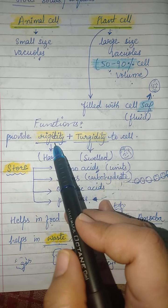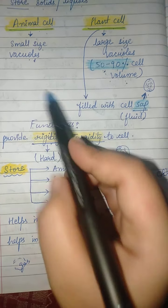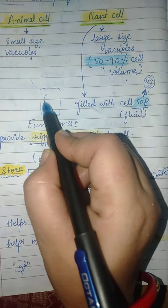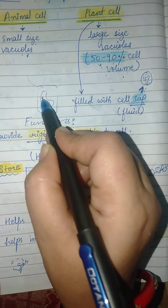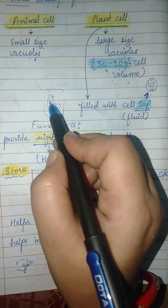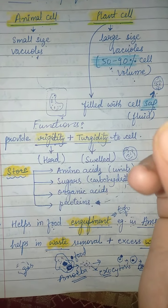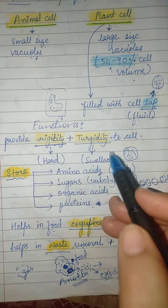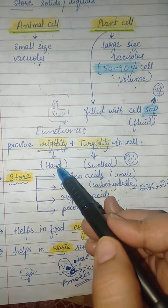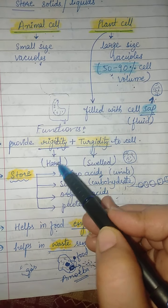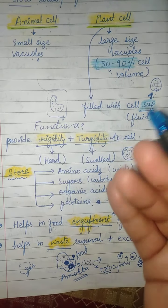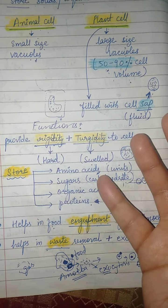The functions of the cell vacuole include providing rigidity and turgidity. When the vacuole is filled with fluid, it gives the cell a particular shape. Rigidity provides hardness and shape, while turgidity refers to a properly swelled cell.